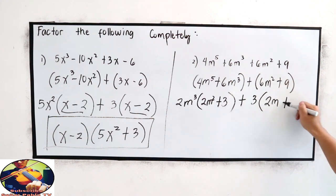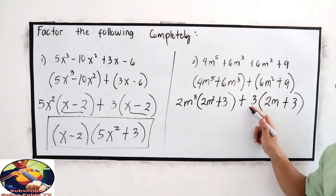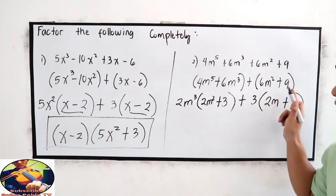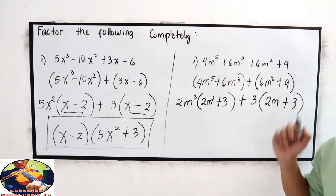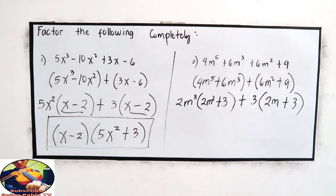And 9 divided by 3 plus 3. For the common factor, we don't have variable because 9 has no variable. Now, that is 2m squared.